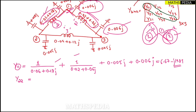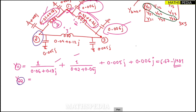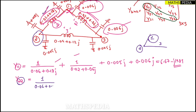For Y22: node two has two lines connected — line one and line three. Add their admittances: one divided by (0.06 + j0.18) for line one, plus one divided by (0.04 + j0.12) for line three. Then add half-line charging once per line: j0.005 for line one.